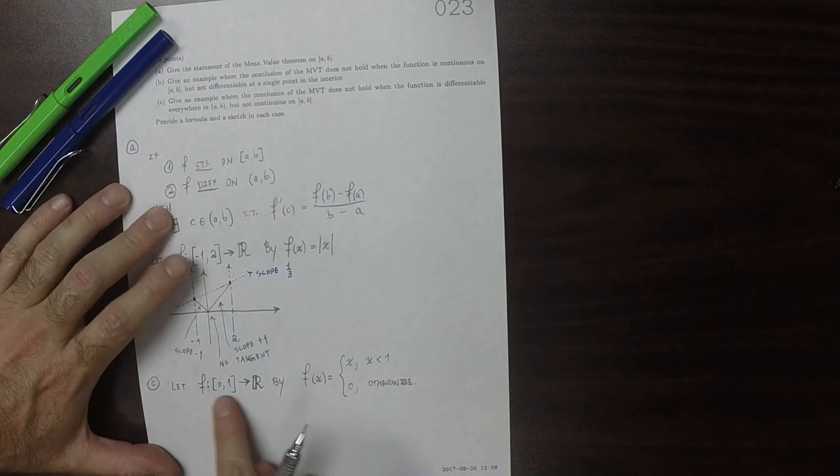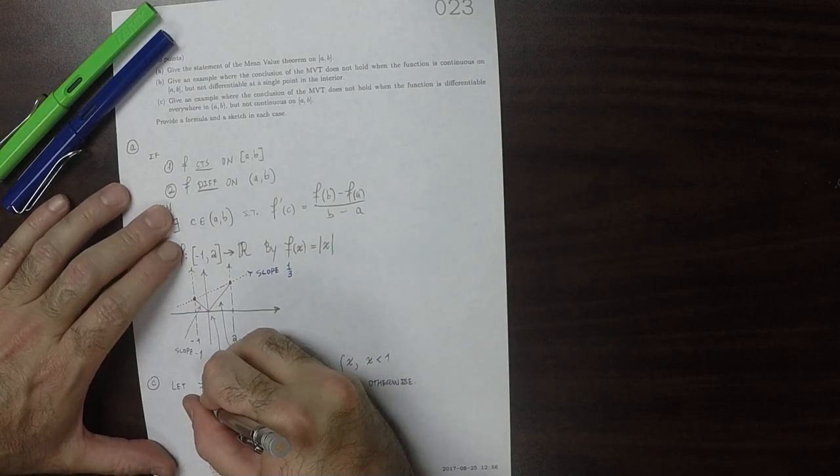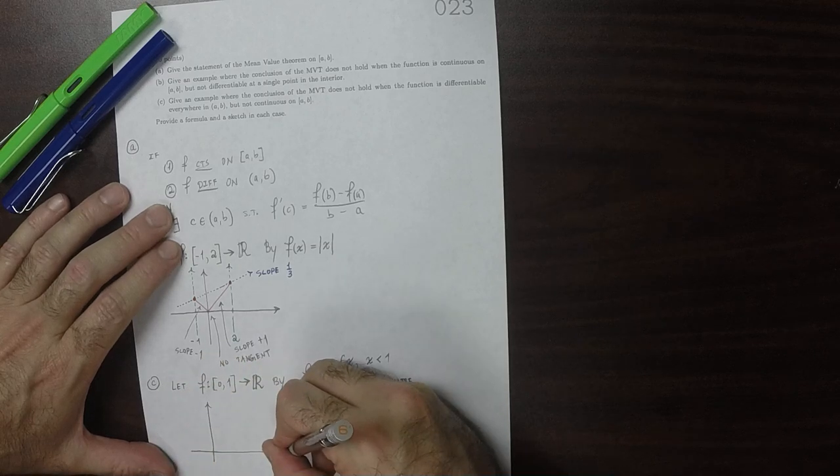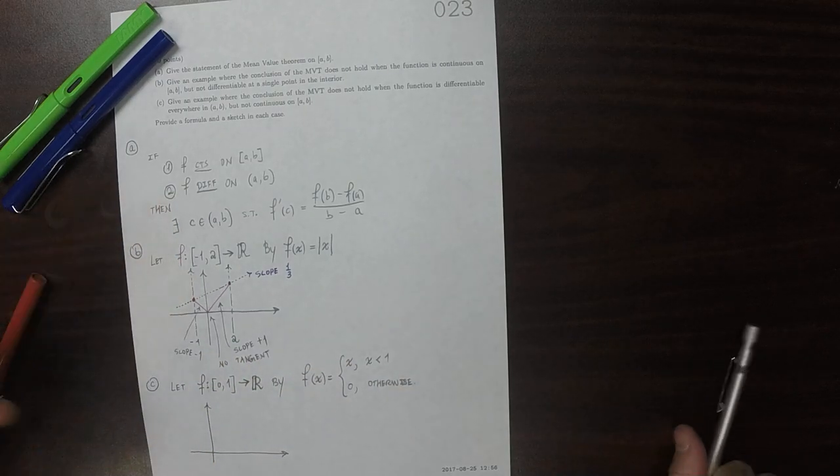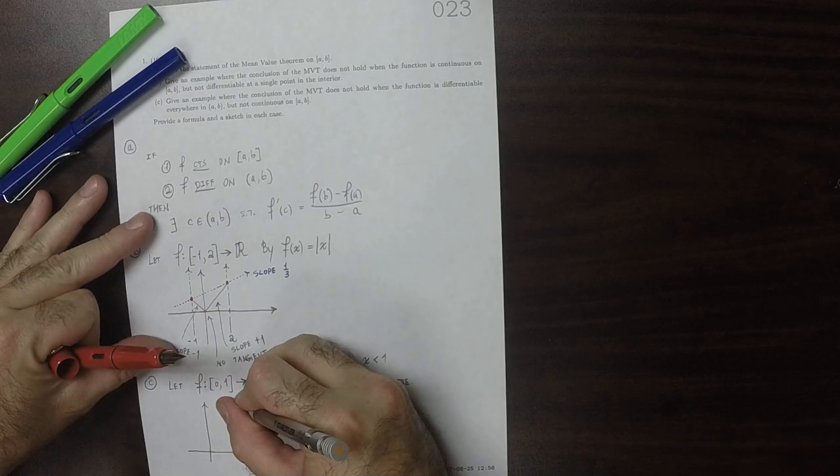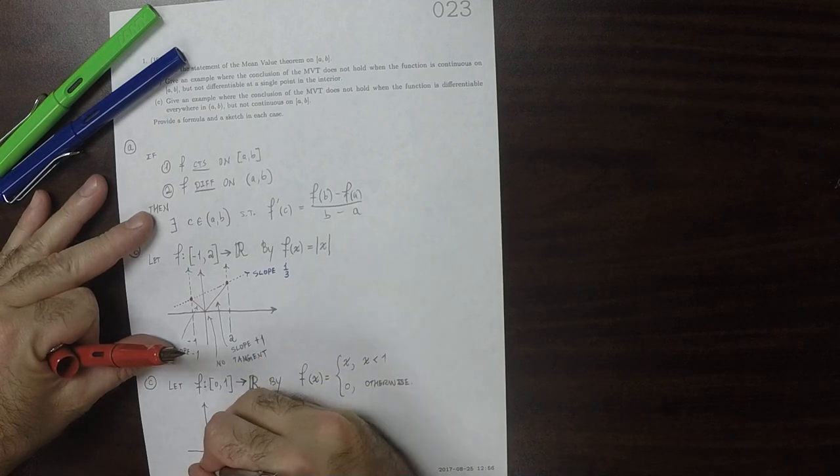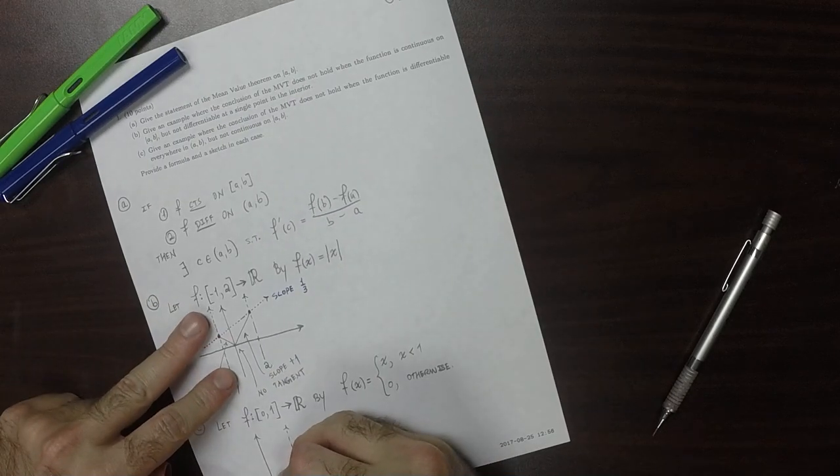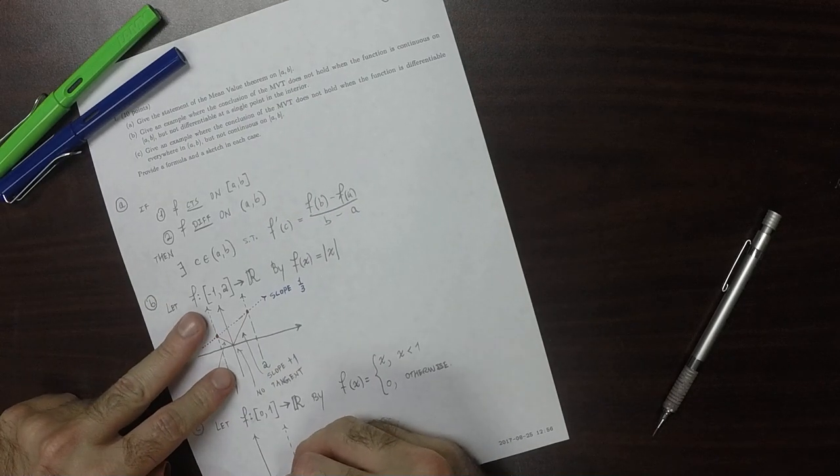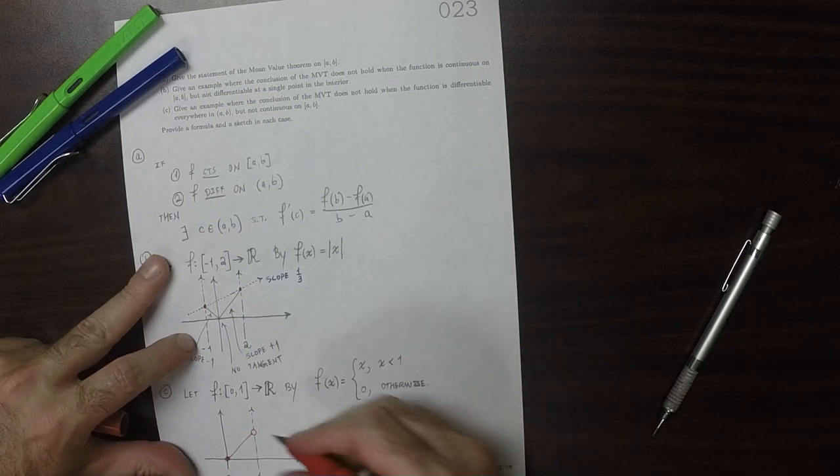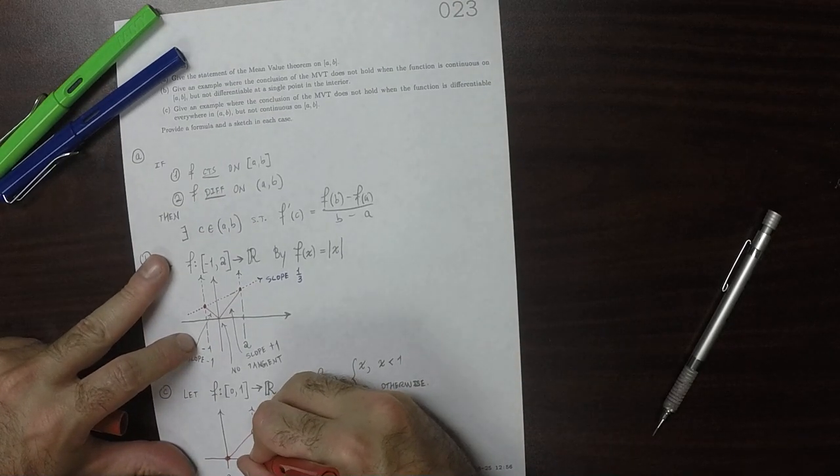So with this domain and that formula, the function in question looks like this. So from 0 to 1, 0 to 1, it does that, and then at the right-end point it jumps down to the bottom.